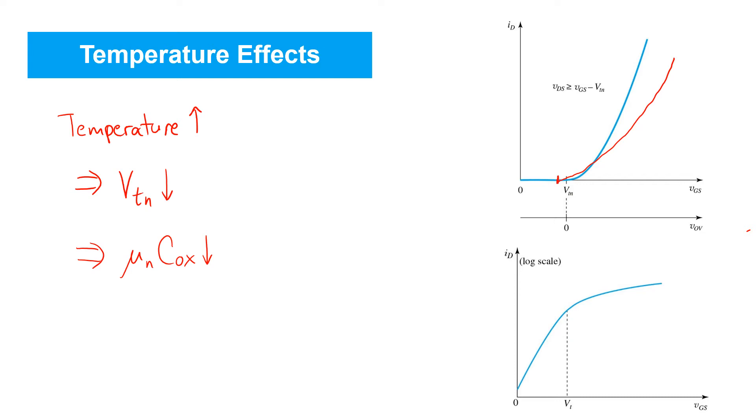So, we get a new curve, something like this. So, the net result is that at any currents of interest in saturation, as temperature increases, we would expect to see less and less drain current.